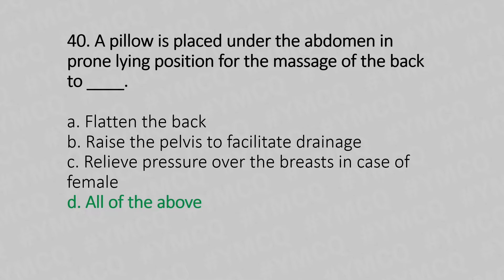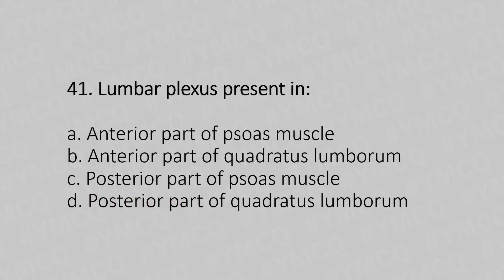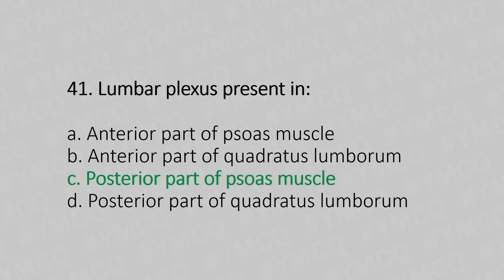Question 41: Lumbar plexus is present in — Option A: anterior part of the psoas muscle. Option B: anterior part of the quadratus lumborum. Option C: posterior part of the psoas muscle. Option D: posterior part of quadratus lumborum. The answer is Option C: posterior part of the psoas muscle.